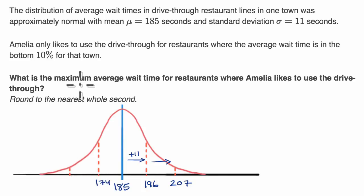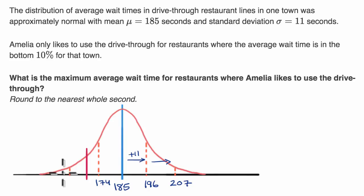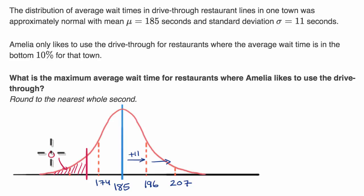We want to find the maximum average wait time for restaurants where Amelia likes to use the drive-thru — that's where the average wait time is in the bottom 10% for that town. There's going to be some threshold value where anything at that level or lower is in the bottom 10%. This is the largest wait time for which you are still in the bottom 10%, so the area to the left of that threshold is 0.10.